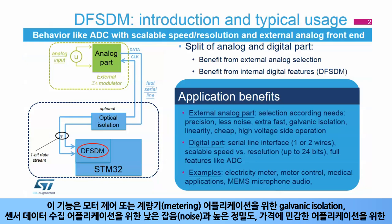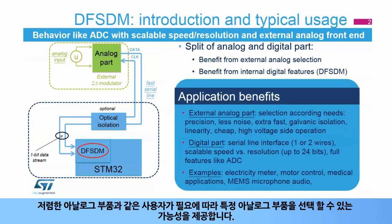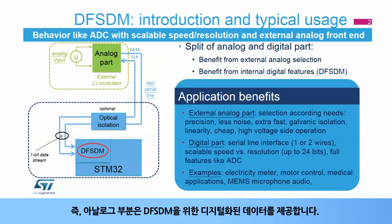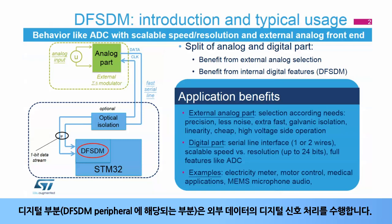This feature offers the possibility to choose a specific analog part according to the user's needs, like galvanic isolation for motor control or metering applications, a low noise and high precision analog part for sensor data acquisition applications, or a cheap analog part for price-sensitive applications. The analog part provides digitized data for DF-SDM, and the digital part, represented by the DF-SDM peripheral, performs digital signal processing from external data.